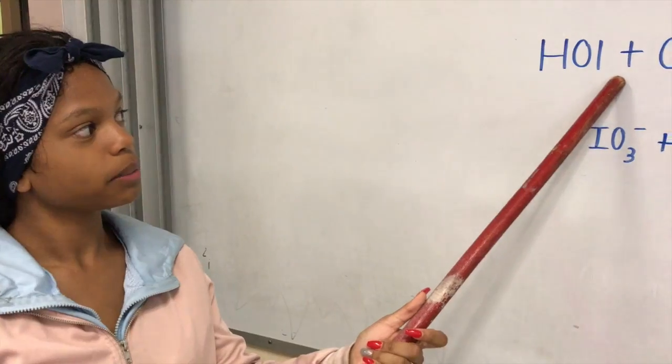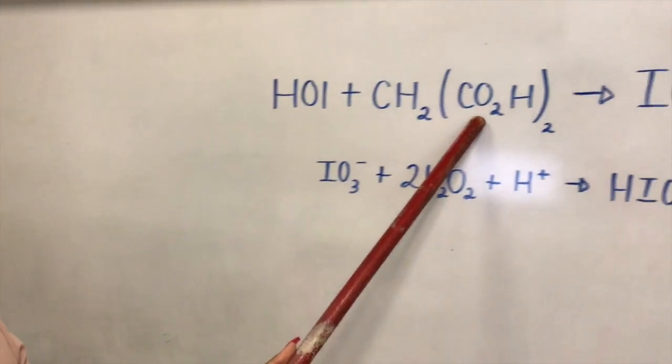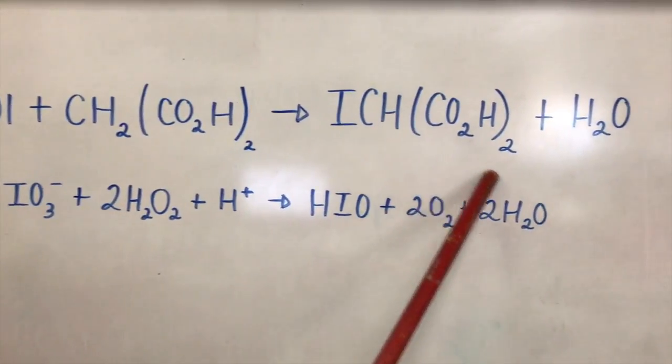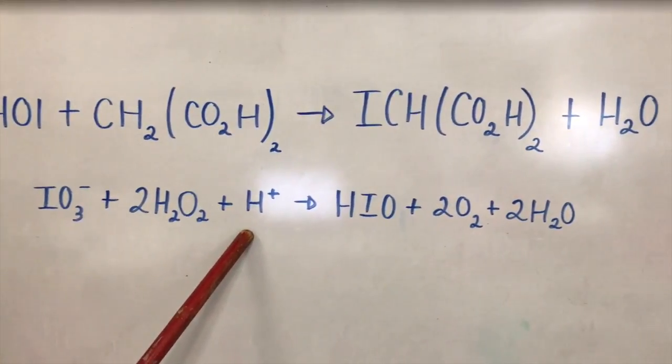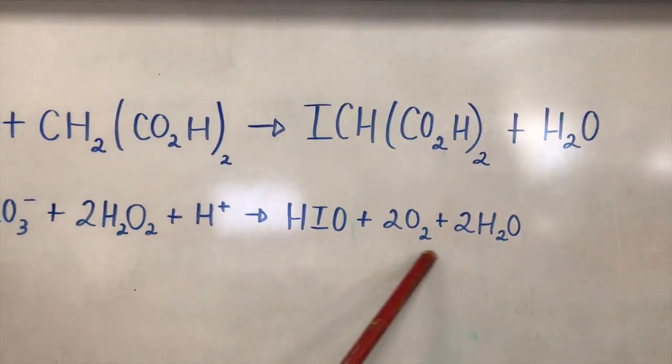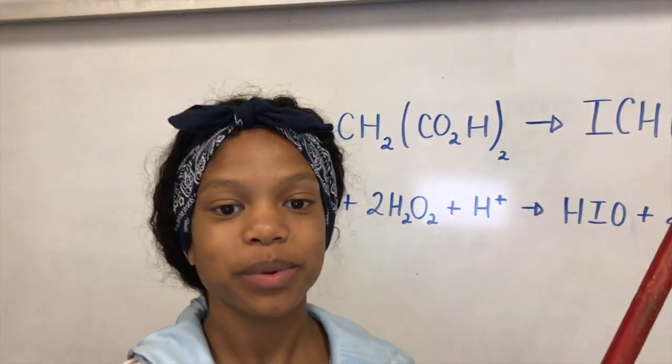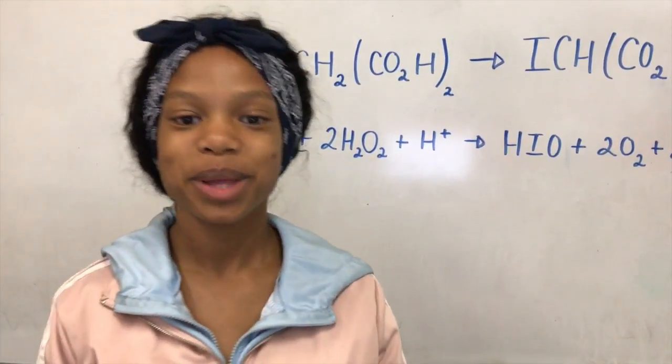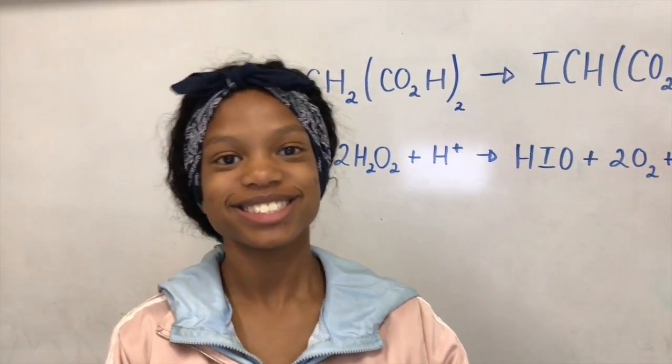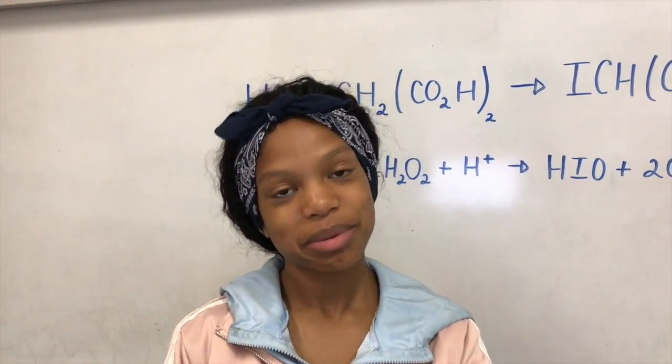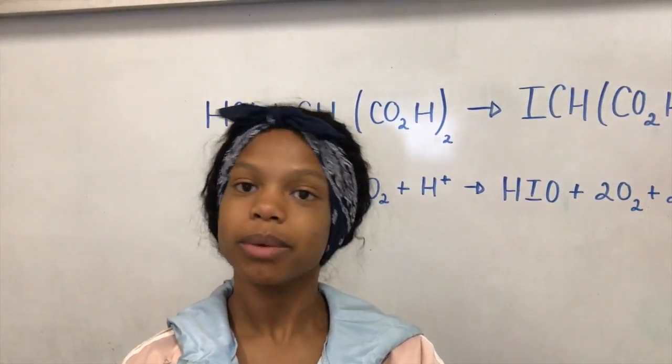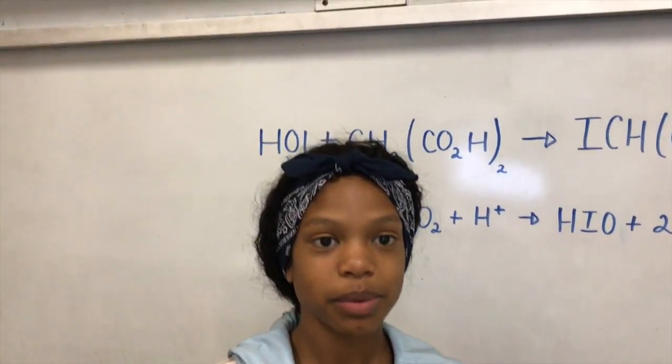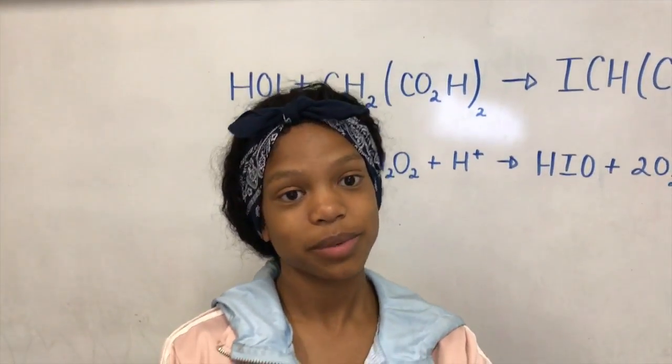HOI will be a weak acid while CH2CO2H2 is the base as an example. ICHCO2H2 will be the conjugate base and H2O is the conjugate acid. For the second reaction, IO3- is going to be the weak base for this reaction. However, 2H2O2 is going to be neutral. It's either going to be a base or acid. H+ is going to be the strong acid in the formula since it gives itself the HIO3-. On the product side, HIO is going to be the conjugate acid and 2H2O is going to be the conjugate base.